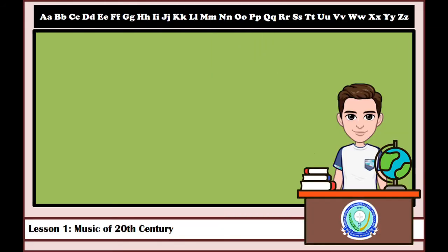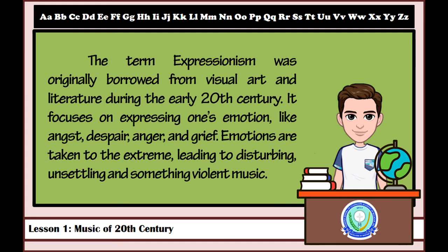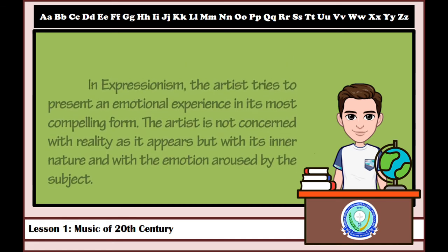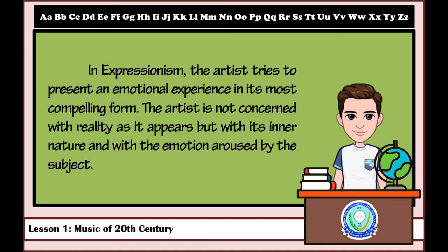After knowing what Impressionism is and who the famous composers under this style are, let us now explore Expressionism. The term Expressionism was originally borrowed from visual art and literature during the early 20th century. It focuses on expressing one's emotions like angst, despair, anger, and grief. Emotions are taken to the extreme, leading to disturbing, unsettling, and sometimes violent music. In Expressionism, the artist tries to present an emotional experience in its most compelling form. The artist is not concerned with reality as it appears but with its inner nature and with the emotion aroused by the subject.